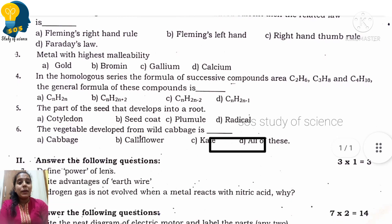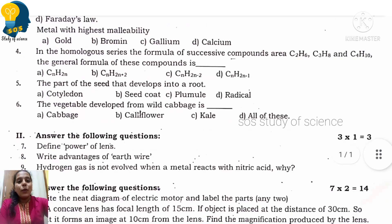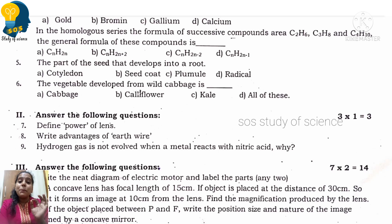Moving to next. The vegetable developed from wild cabbage. This is from heredity and evolution, related to artificial selection concept. Options are cabbage, cauliflower, kale, and all of these. Actually the right answer is all of these. Wild cabbage is one vegetable and from that, through desirable traits and artificial selection by farmers, cabbage, cauliflower, kale, kohlrabi, and broccoli were developed.